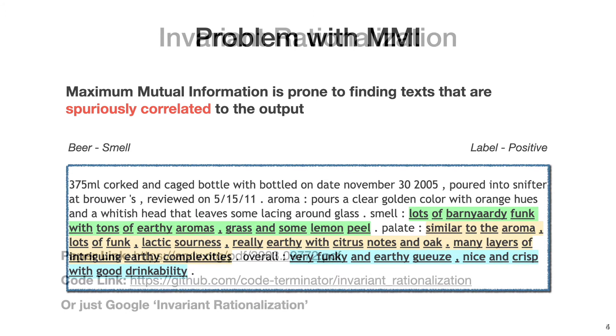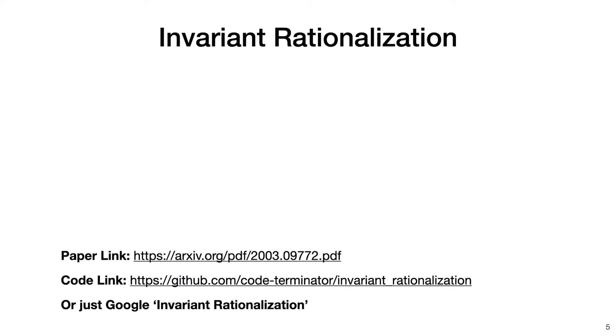Motivated by this, we propose a new rationalization scheme called invariant rationalization, which, instead of maximizing the probabilistic correlation, tries to select the sentences that can causally explain the output as rationales. Invariant rationalization approximates this causal inference task by searching sentences that are invariant.